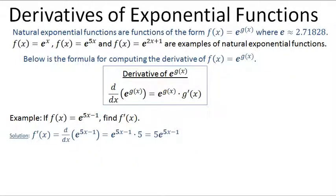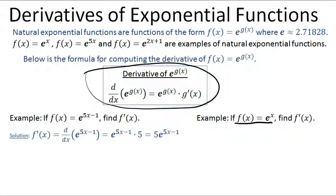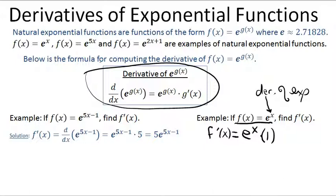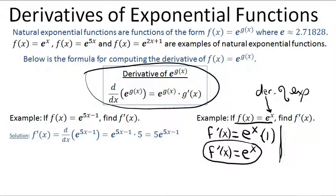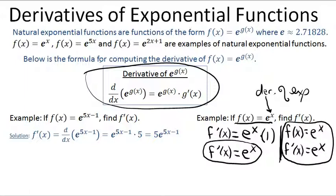Let's try another. Suppose f of x equals e to the x. Applying the derivative formula for exponentials, the derivative would be the exponential itself — e to the x — multiplied by the derivative of the exponent. But the derivative of x is just 1, so f prime of x is simply e to the x. This function is its own derivative: you start with e to the x, take the derivative, and still get e to the x.